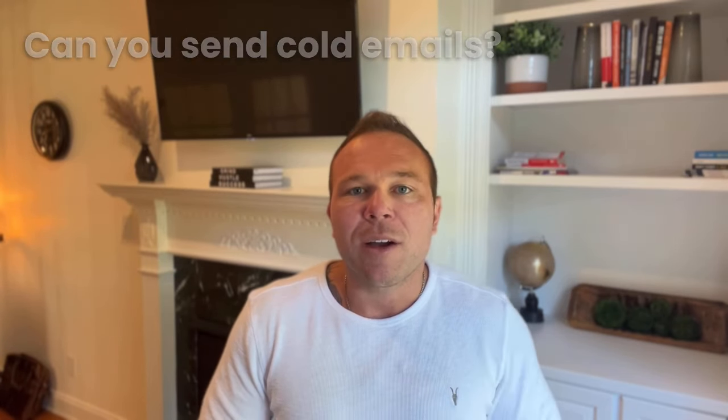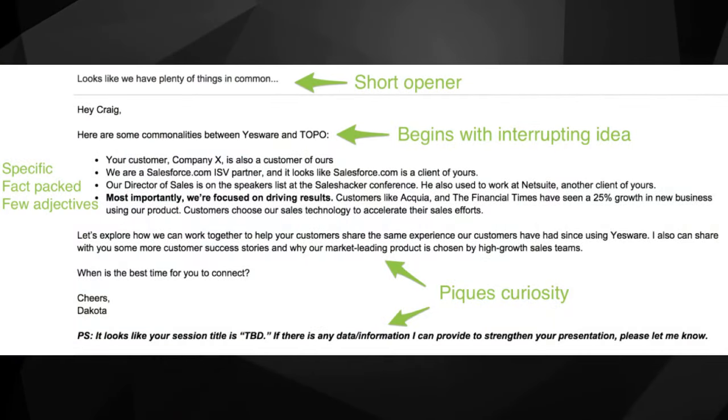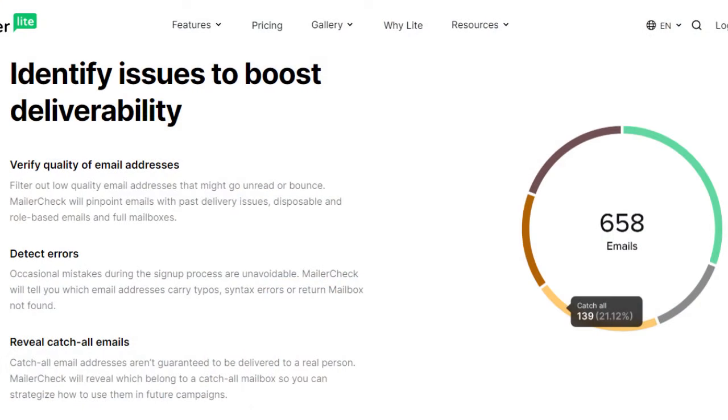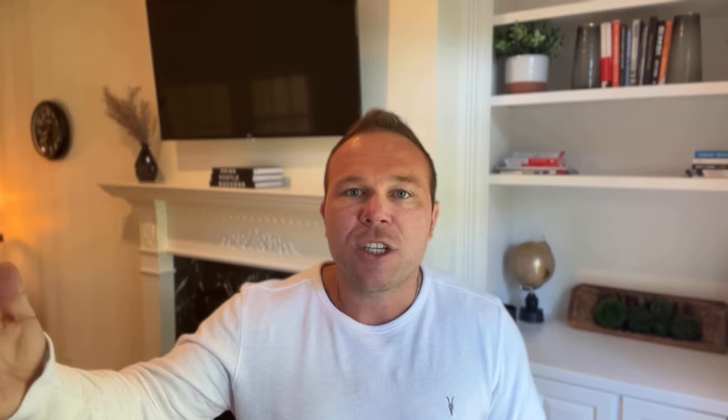Another common question I get is: can you send cold emails with MailerLite? I don't recommend doing that right away, but once you get approved and start building up your email reputation with the servers, you can start sending cold emails. I highly recommend not sending more than 100 per day — limit it to 99 or less. They also have a mail check verification where you'd want to run those emails through to make sure they're all legitimate, because if you send cold emails to invalid addresses, your account will get shut down.